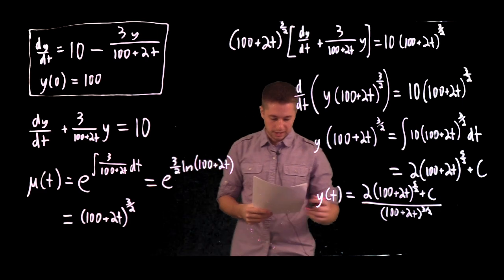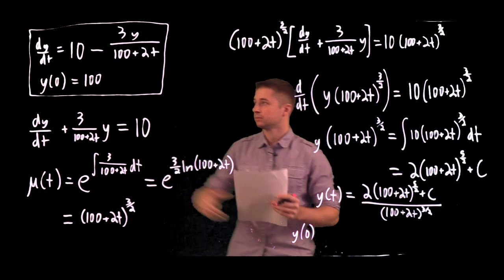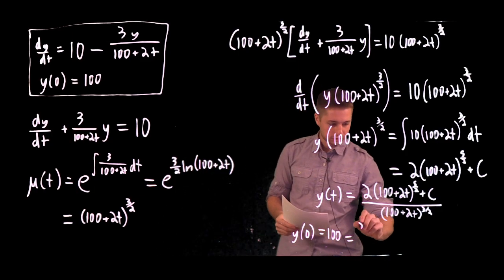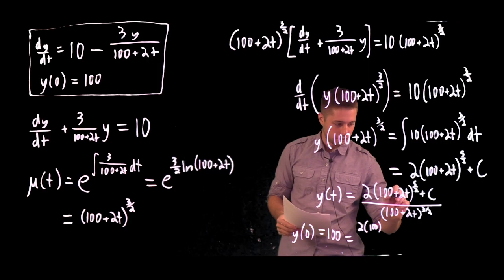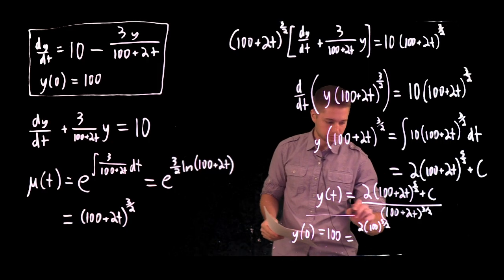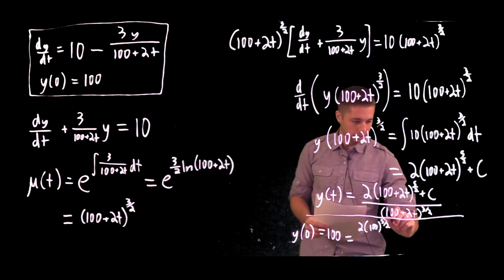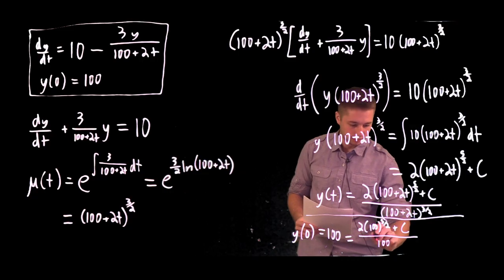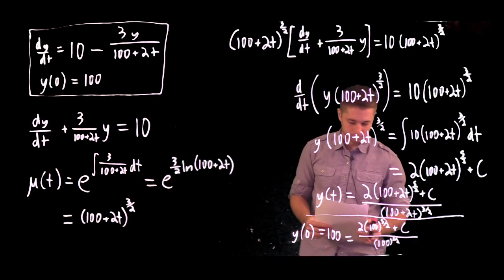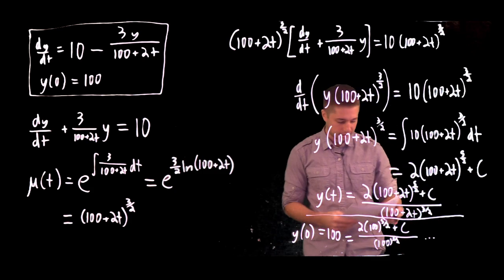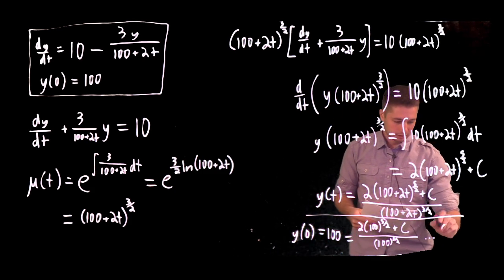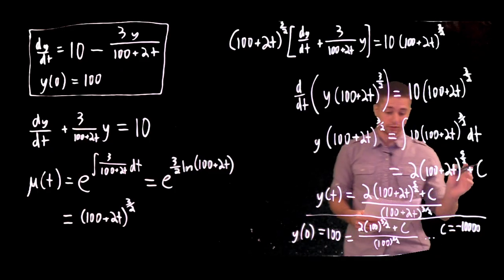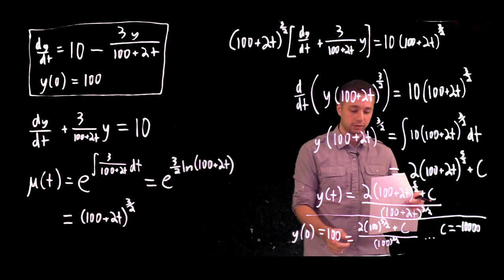The next step is to use the initial condition to find C. Setting y(0) = 100, we get: 100 = [2(100 + 0)^(5/2) + C] / (100 + 0)^(3/2). Solving for C, we get C equals negative 10,000.